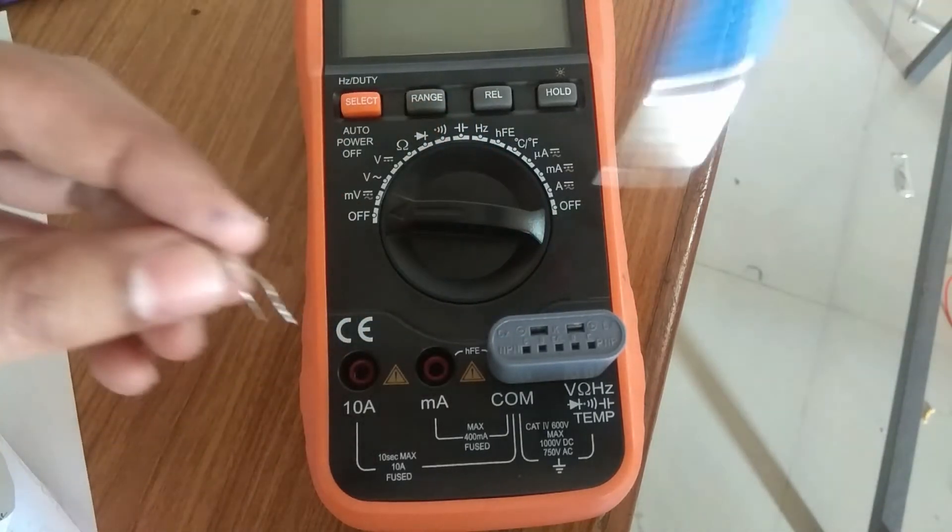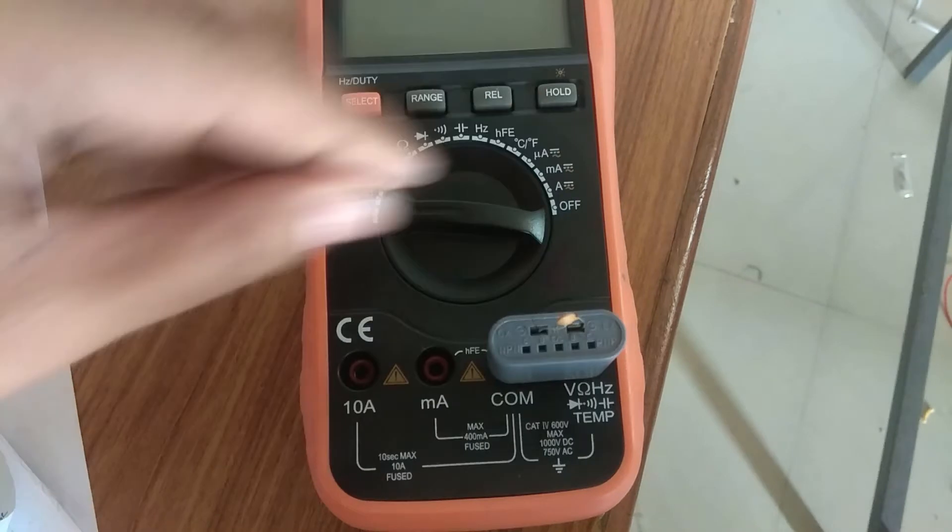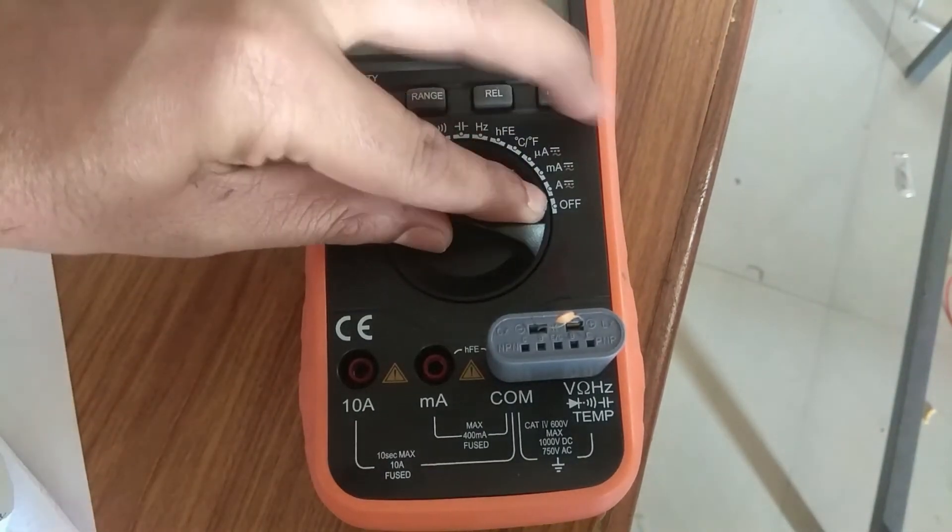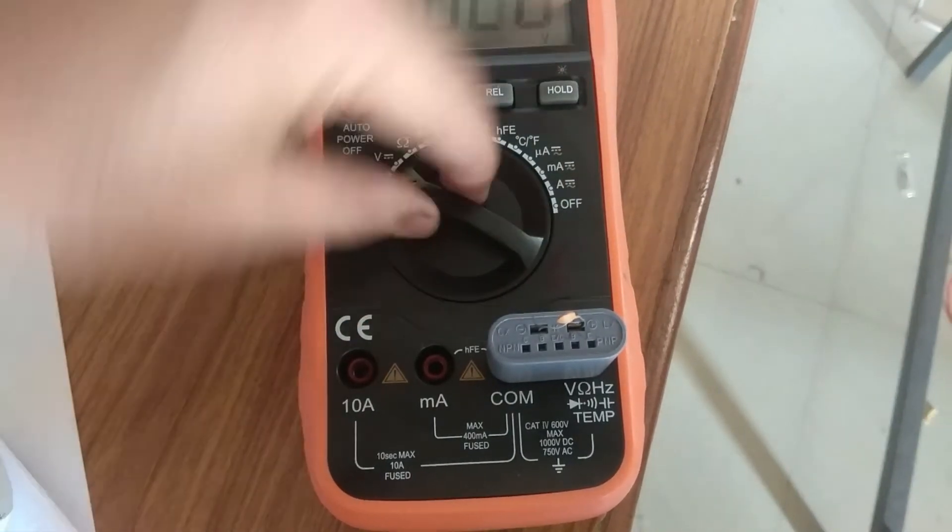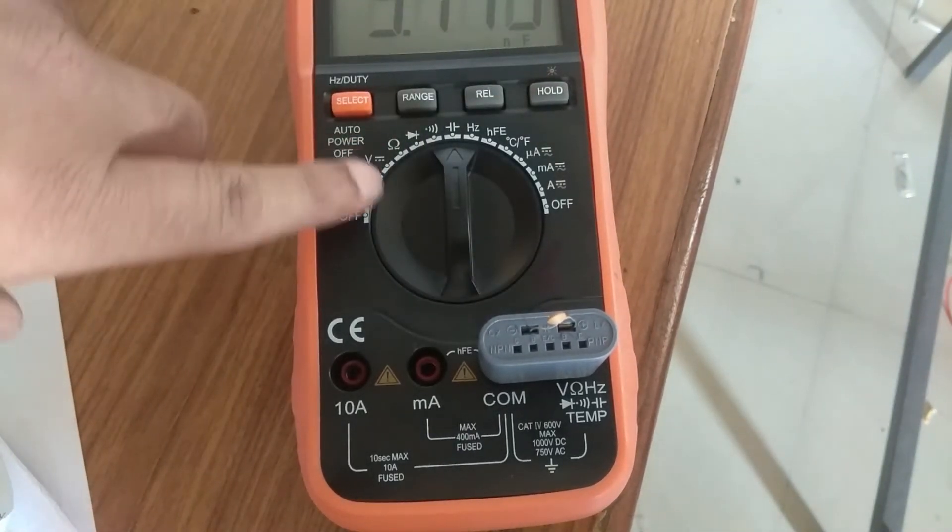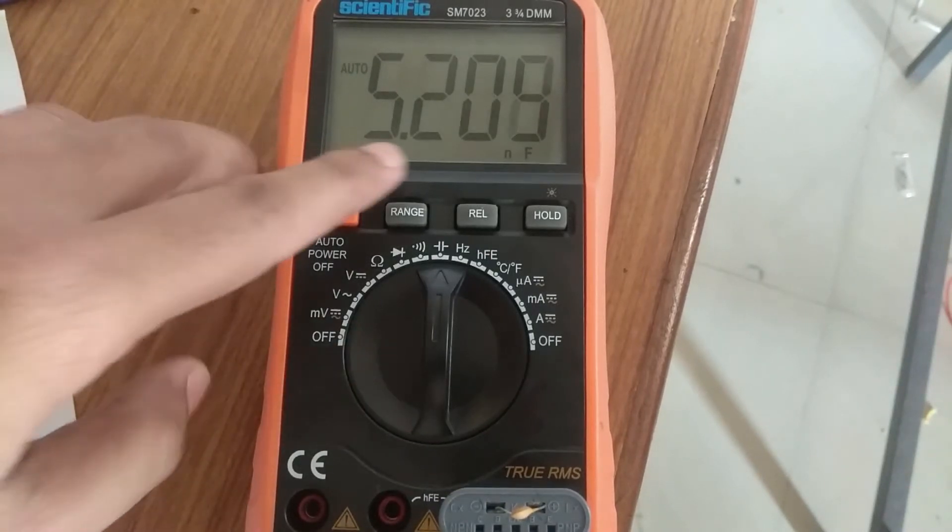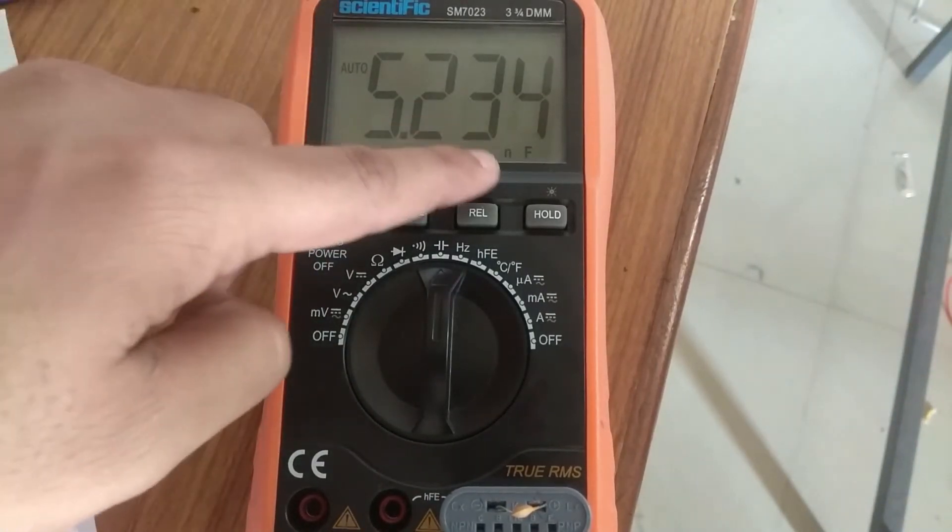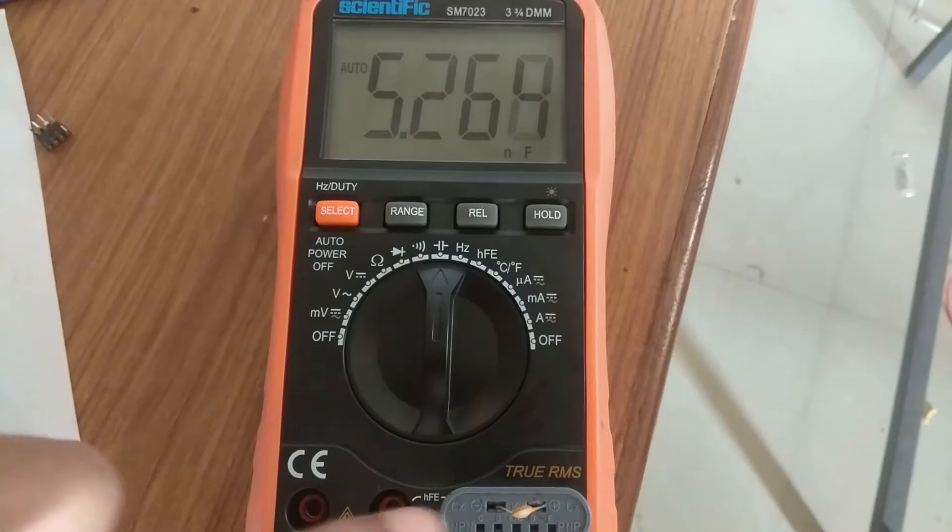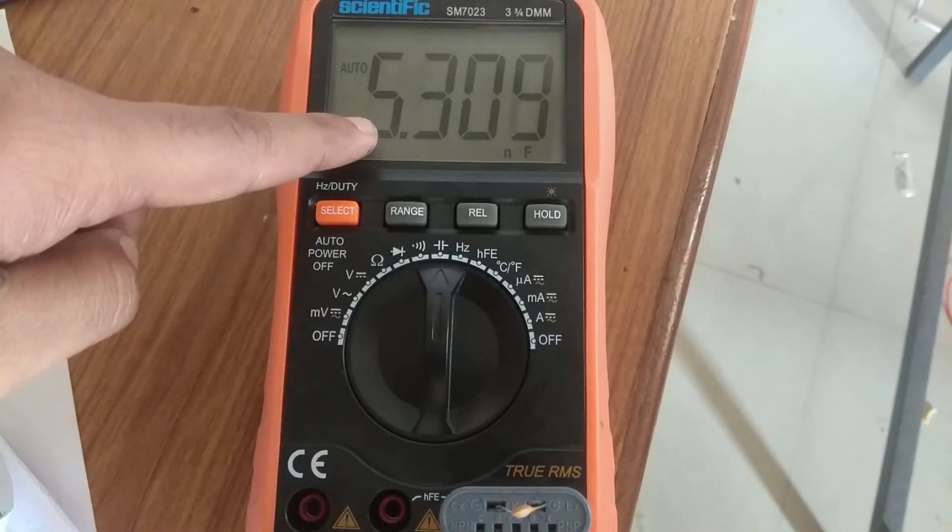This is the two places where we will keep the capacitor, and now we will move our knob to capacitor mode. Now this has come to capacitor mode, and if you want to see the reading, it is around 5.2 nanofarad. But we have taken, this capacitor was rated around 4.7 nanofarad, but it is coming around 5.2 nanofarad.